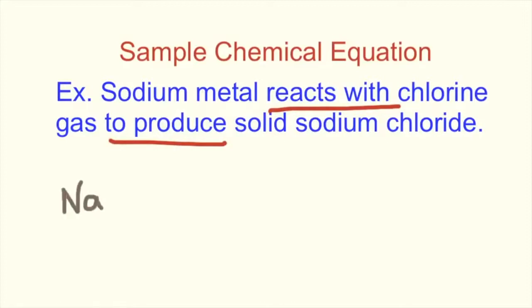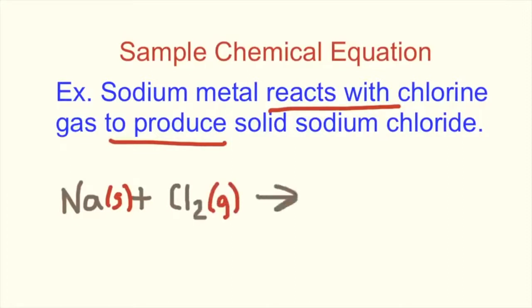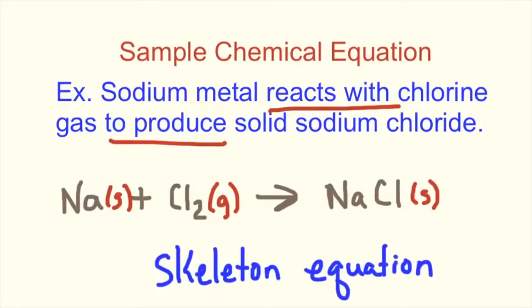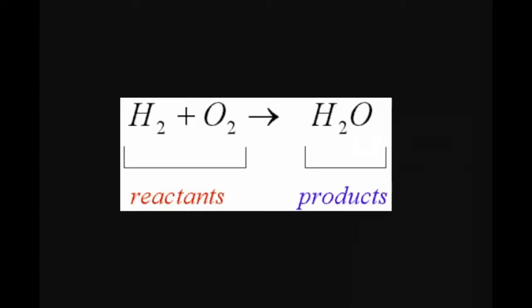The reactants are always written on the left side of the arrow, and the products on the right. The arrow pointing from left to right shows that the reactants change into the products during the reaction. This happens when chemical bonds break in the reactants and form new bonds in the products. As a result, the products are different chemical substances than the reactants.